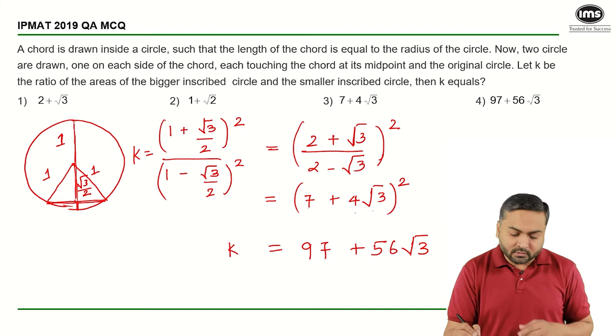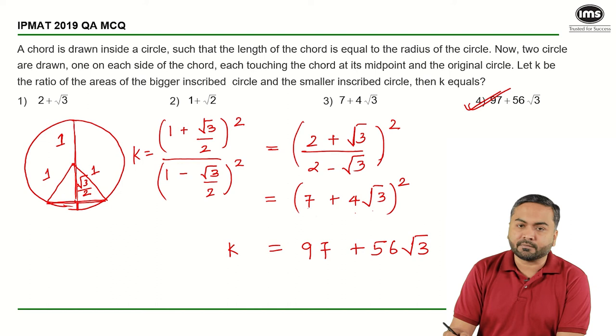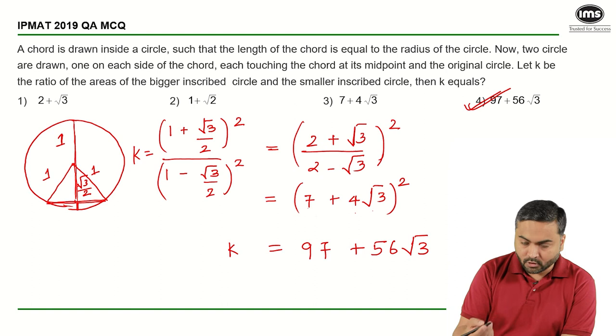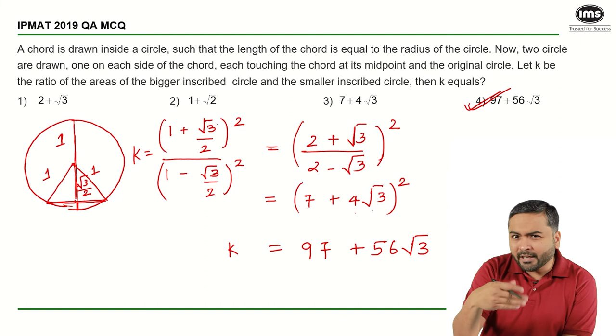Now, one way where you could have avoided all the calculation is the moment we get the value of the diameter. Basically, root 3 upon 2 is approximately 1.7 by 2 that is approximately 0.85.